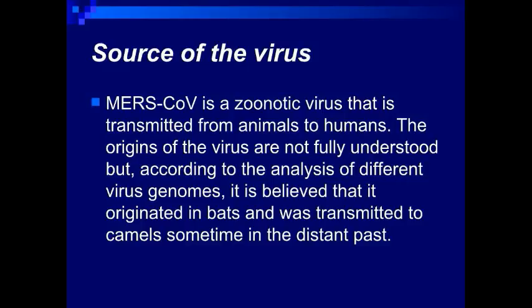Source of the virus. MERS coronavirus is a zoonotic virus that is transmitted from animals to humans. The origins of the virus are not fully understood, but according to the analysis of different virus genomes, it is believed that it originated in bats and was transmitted to camels sometime in the distant past.